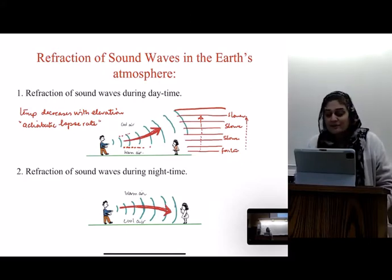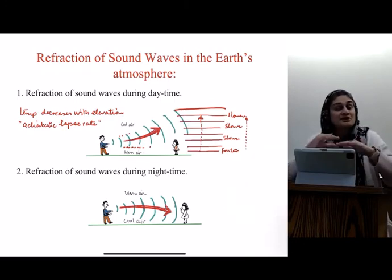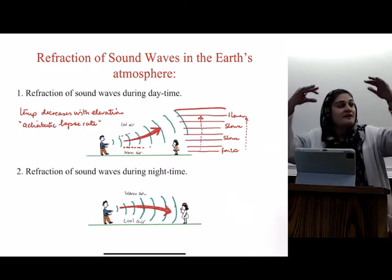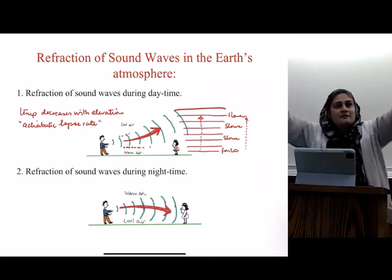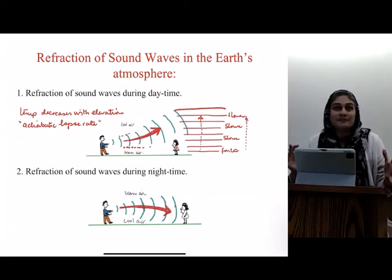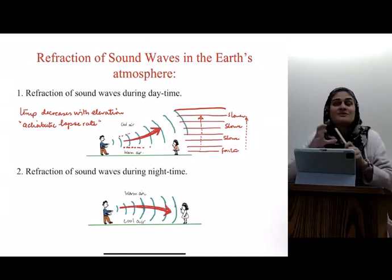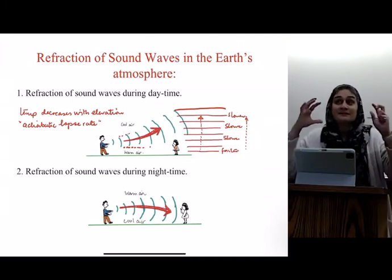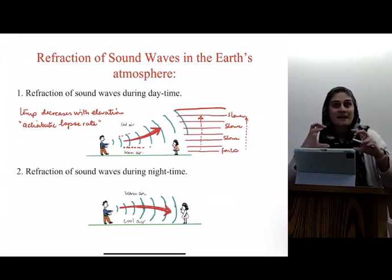On the other hand, during nighttime, what will happen? The surface of earth is cooler than the warm air on the top, especially if you have clouds. Have you ever noticed when it's cloudy, it doesn't get that cool? And when it's a clear sky, it gets really cold at nighttime.